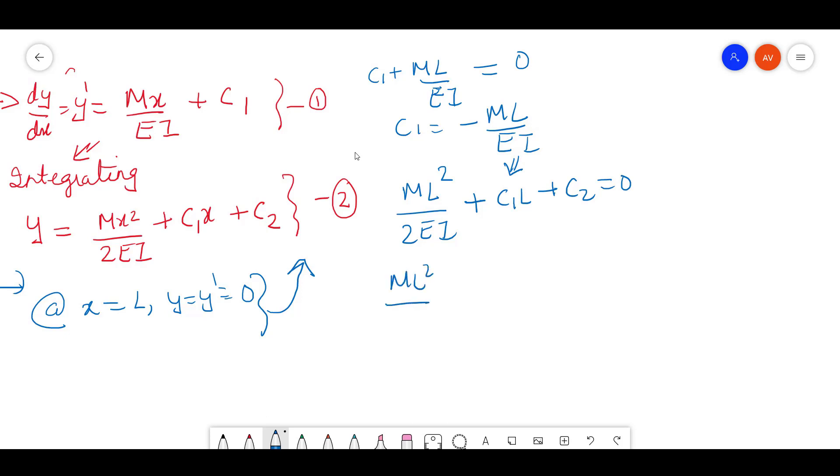Therefore, ML²/2EI, you can put C1 into it and you will get ML²/2EI plus C2 equals zero. Therefore, your C2 is going to be positive ML²/2EI.